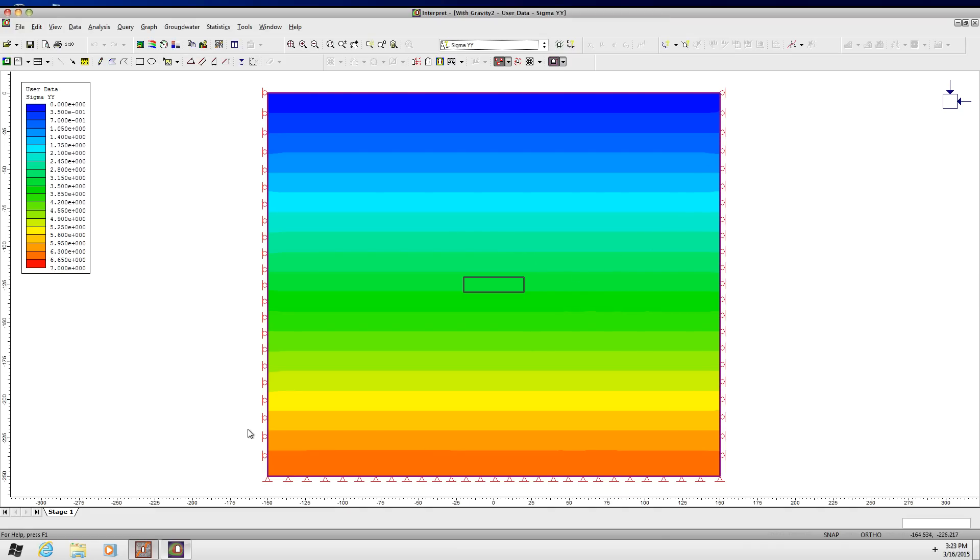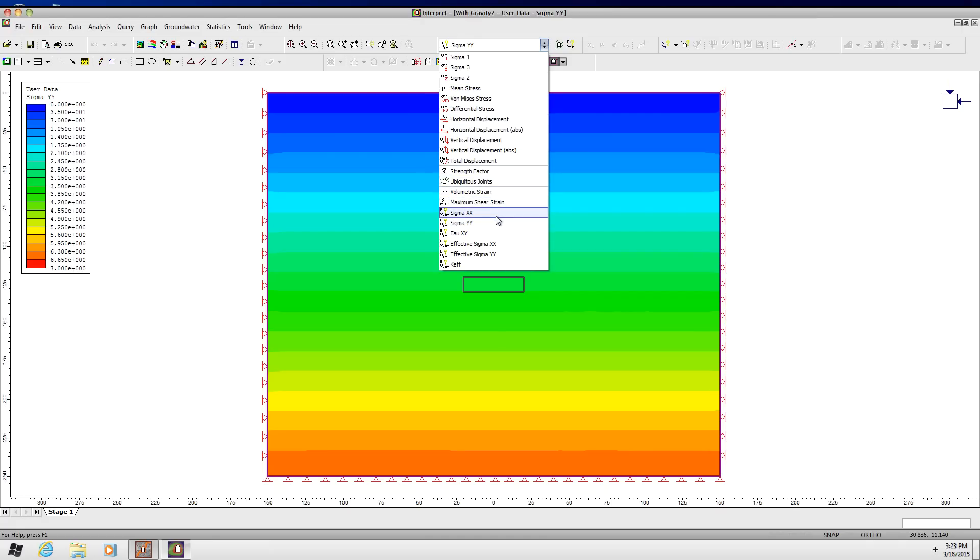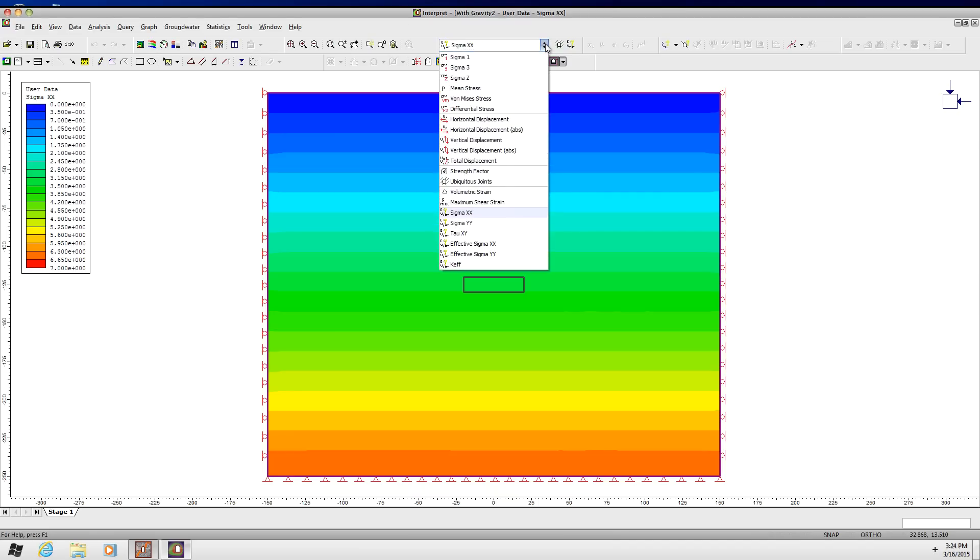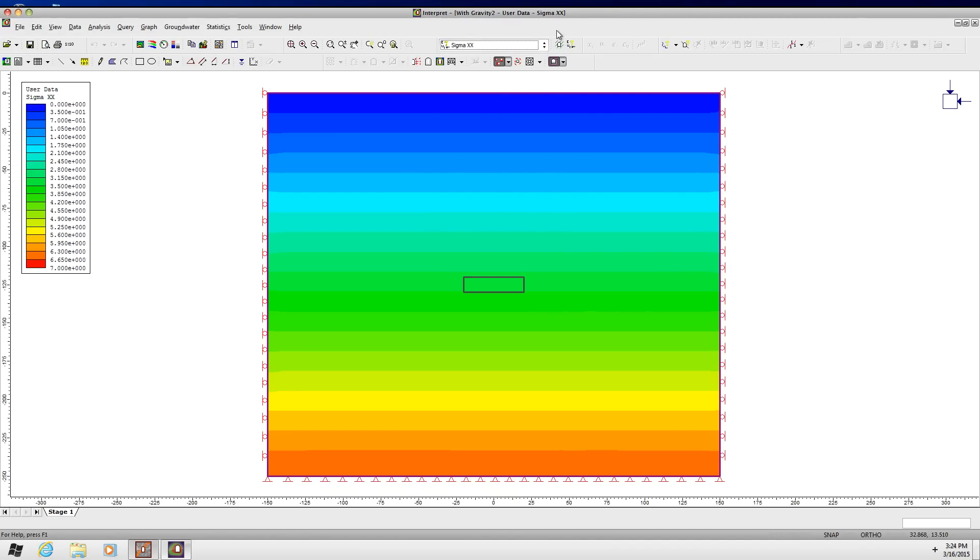And the vertical stresses, sigma yy, are the exact gradient that I want. 0 to about 6.7 MPa. And all you have to do is multiply the unit weight by the depth. And check it. Sometimes I will spot check it. But you can see that it has pretty clearly got the kind of uniform gradient that I am looking for. And I also check all the other stresses to make sure they are the same. Sigma X. And sigma Z. And so everything is the way I intend it to be. And the model has worked out very well.